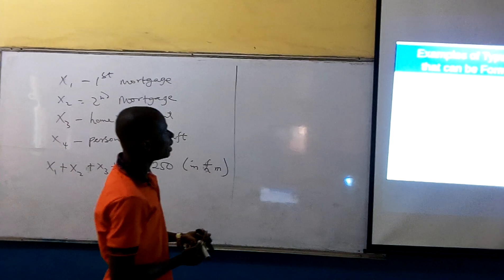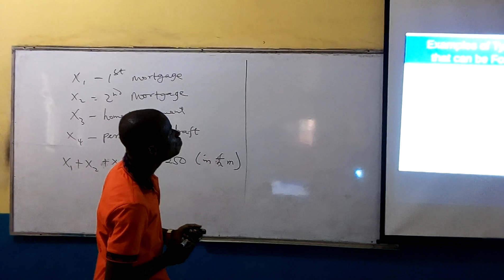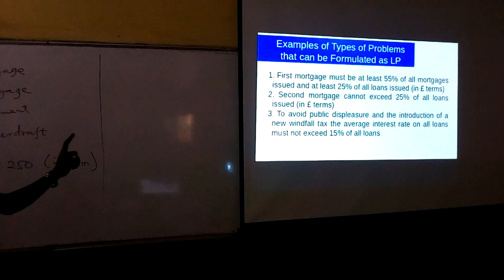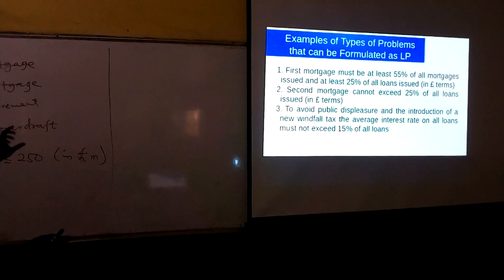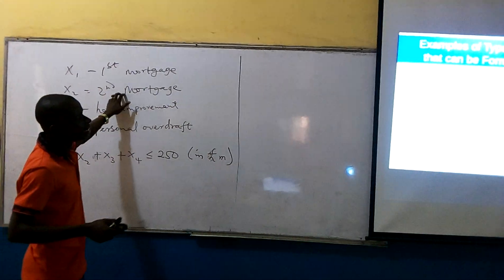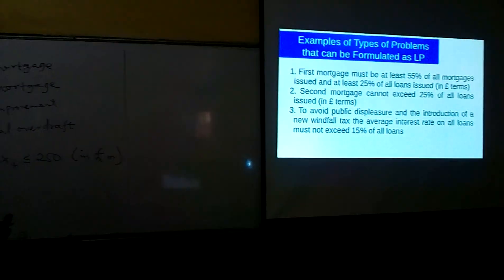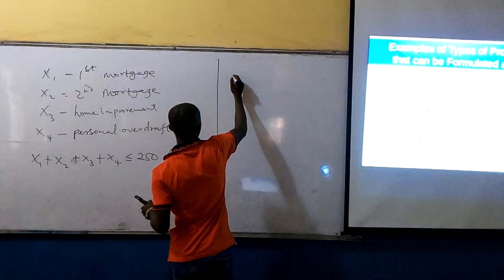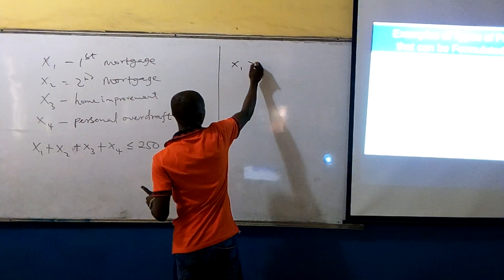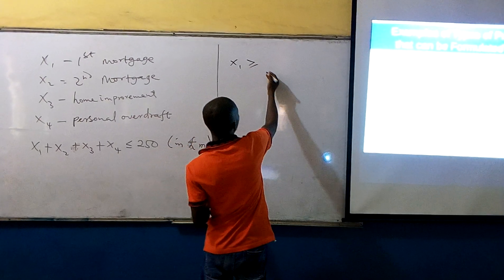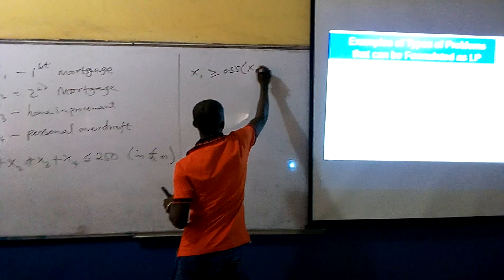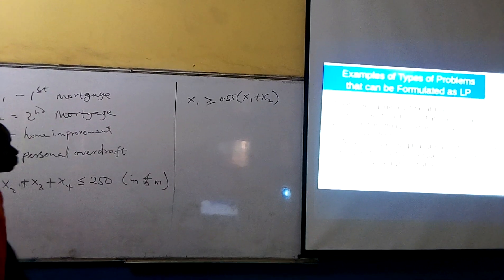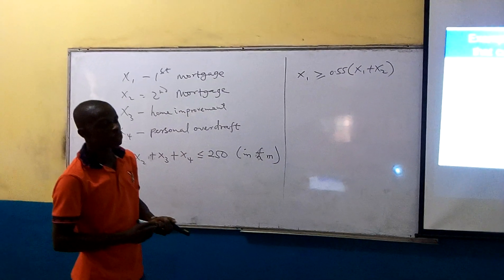The other constraint is that the first mortgage must be at least 55% of all the mortgage. There are only two mortgages: first and second. 'At least' means greater than or equal to, so X1 ≥ 0.55(X1 + X2). That is the first constraint.